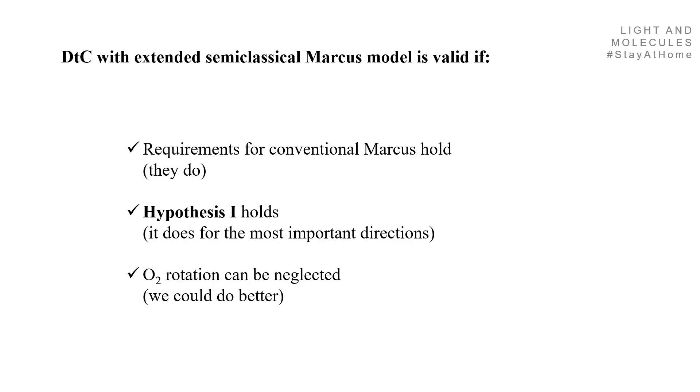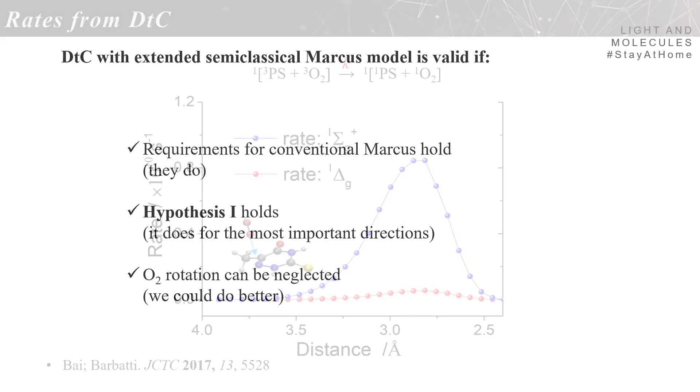And the O2 rotation can be neglected. At this point, you could do better, but you have a good approximation so far. And assuming that, you can just define an orientation and direction of collision between O2 and PS and compute the rate as a function of the distance.